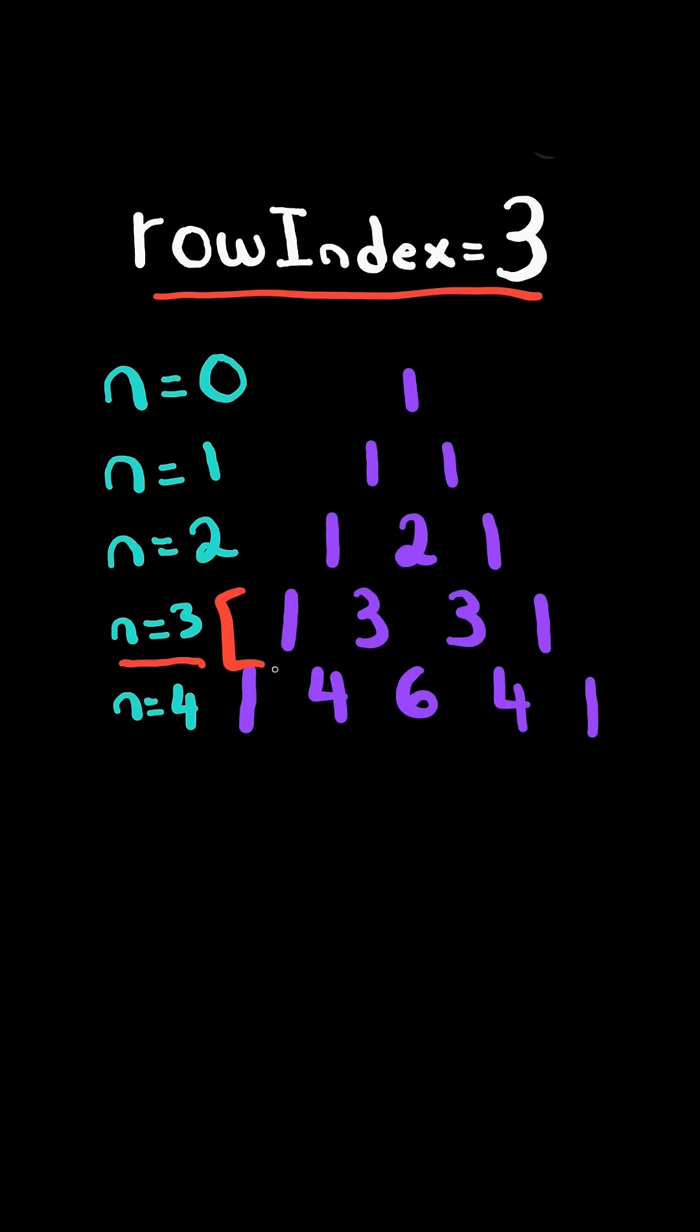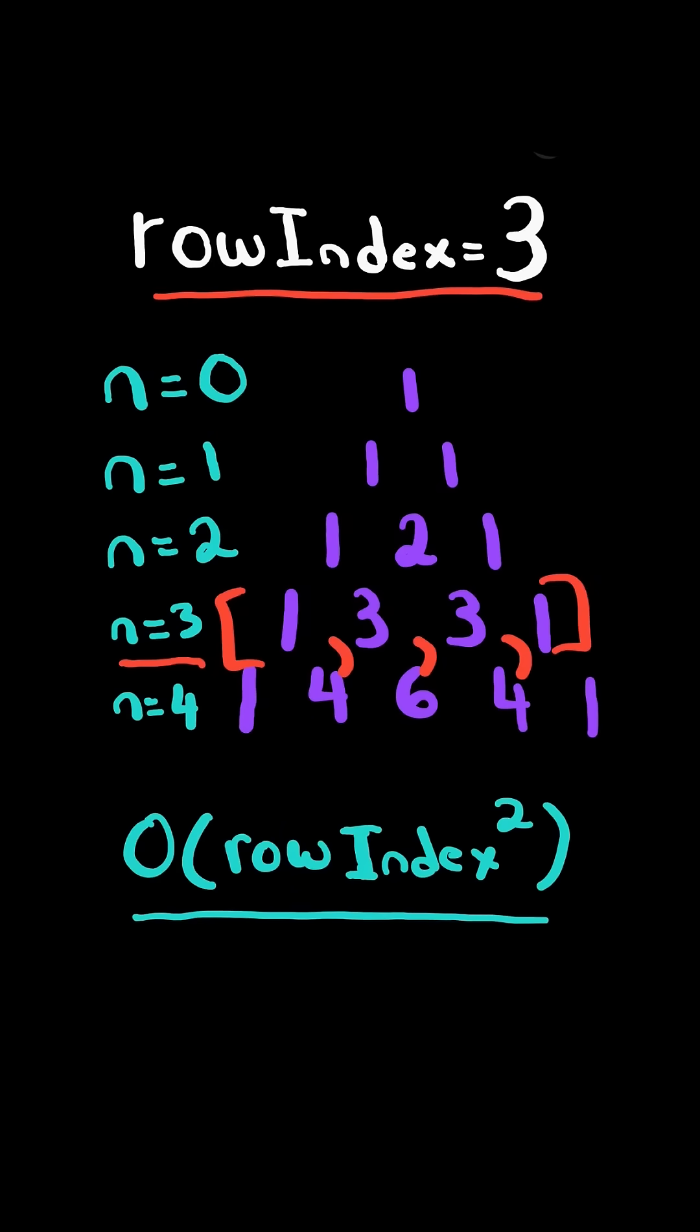In this case, we want to return a list corresponding to the row index. We will solve this in O of row index squared time and O of row index space.